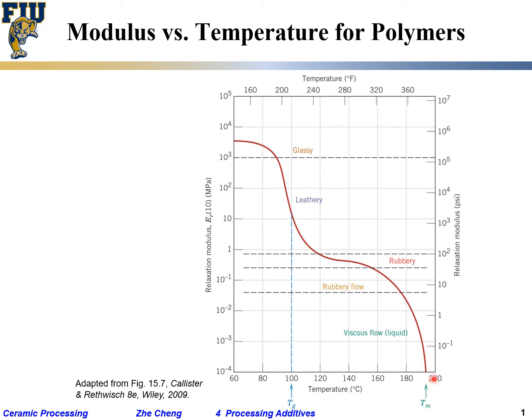If we are above Tm — the melting temperature — the polymer is in a free-flowing, low-viscosity liquid state. If it's completely liquid with very low viscosity, the modulus is almost negligible — around 10 to the minus 4. Liquid cannot sustain any shear or tensile stress; liquid just flows. So above Tm, you have almost no modulus.